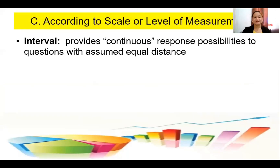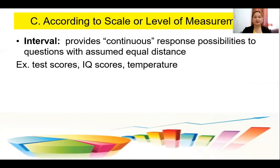Third, we have interval. Interval provides continuous response possibilities to questions with assumed equal distance. For example, test scores — 75 and above is a passing score, below 75 you fail. IQ scores and temperature are also examples. If you have a temperature of 37.7, you have a fever — so 37.7 and above is an interval.